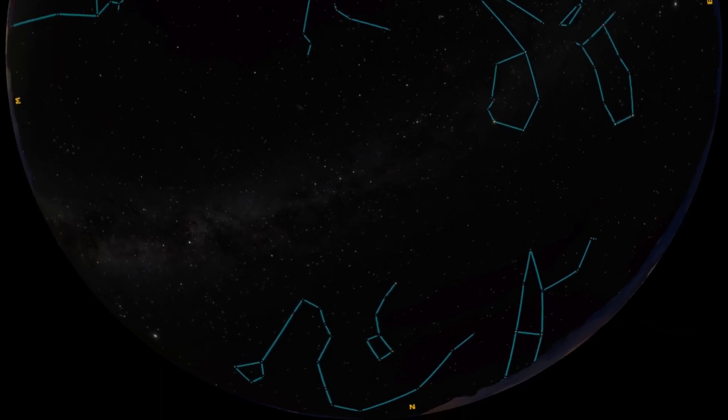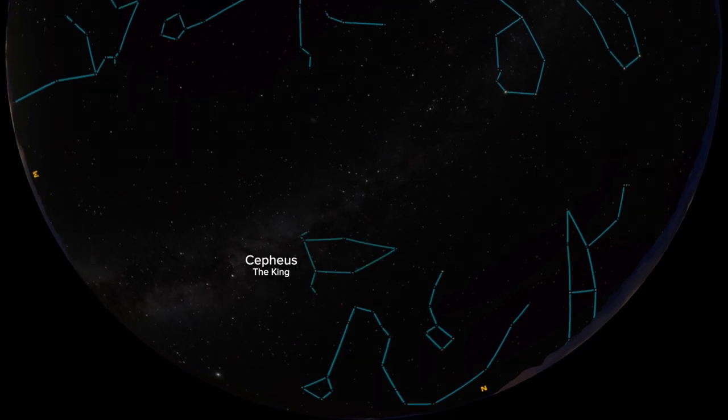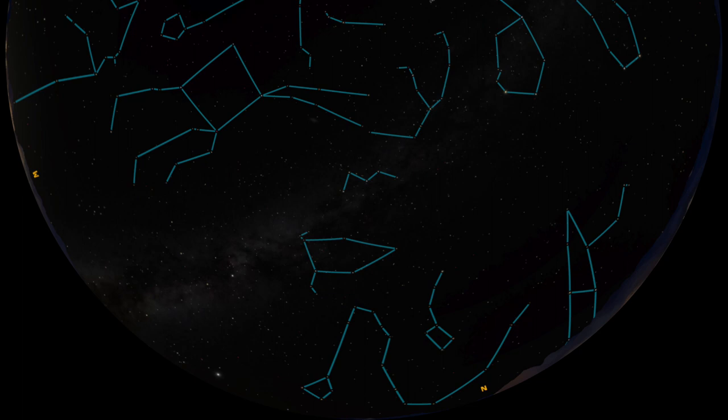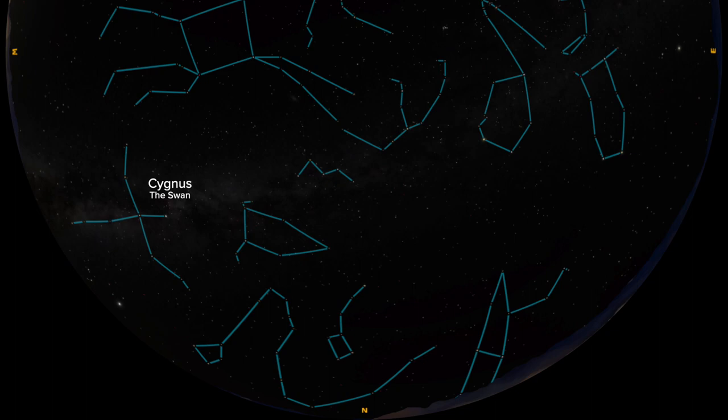Moving back up a little, we have our royal family of Cepheus the King, Cassiopeia the Queen, Perseus the Hero, and Andromeda the Princess, along with Pegasus the Flying Horse. Finally, to round us out, we have the last constellation in our Summer Triangle, Cygnus the Swan setting to the northwest.